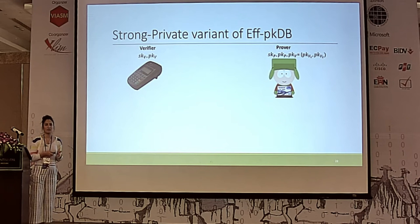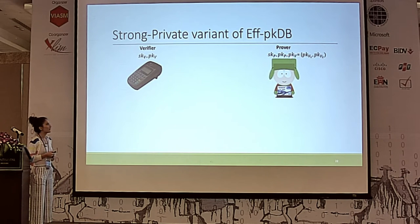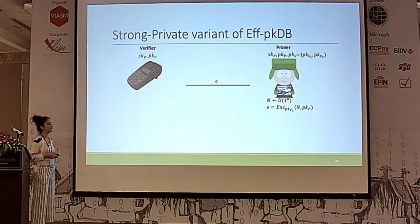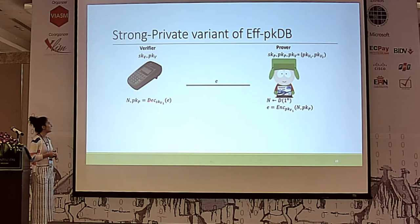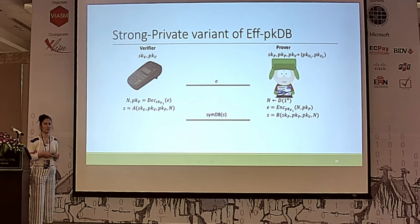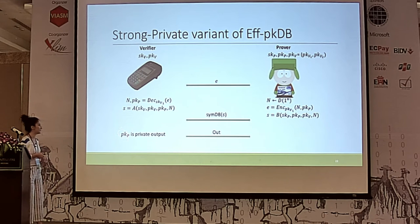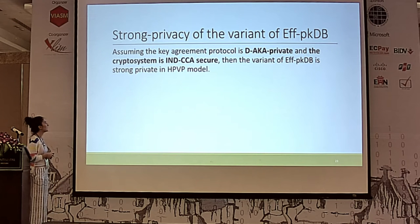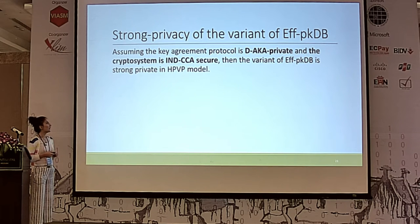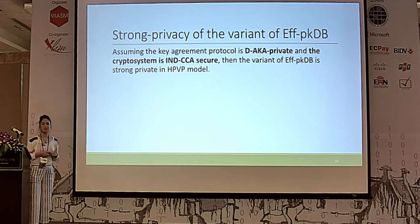The private variant is straightforward. Here the prover's public key has two parts, PKV1 and PKV2. The prover generates N, encrypts it with the verifier's public key, and sends it to the verifier. The verifier decrypts and learns the message. Then they generate secret S and run the symmetric key distance bounding protocol. PKP is the private output of the verifier. We prove that the private variant of FPKDB is strong private in the HPVP model if the key agreement protocol is DAK private and the cryptosystem is IND-CCA secure.